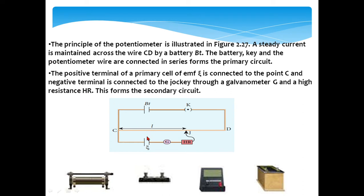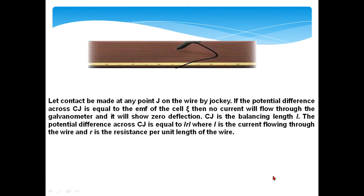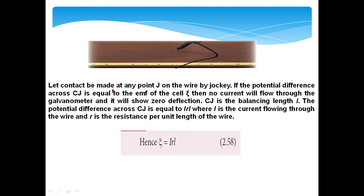The positive terminal of the primary cell of EMF psi is connected to point C, and the negative terminal is connected to the jockey through galvanometer G and high resistance HR. This forms the secondary circuit. So battery and key form the primary circuit, while the primary cell, galvanometer, high resistance, and jockey form the secondary circuit.